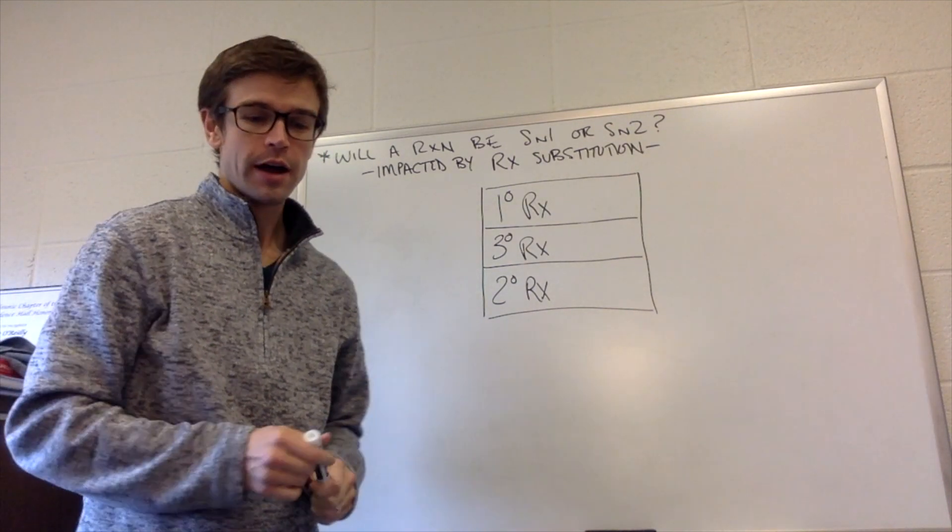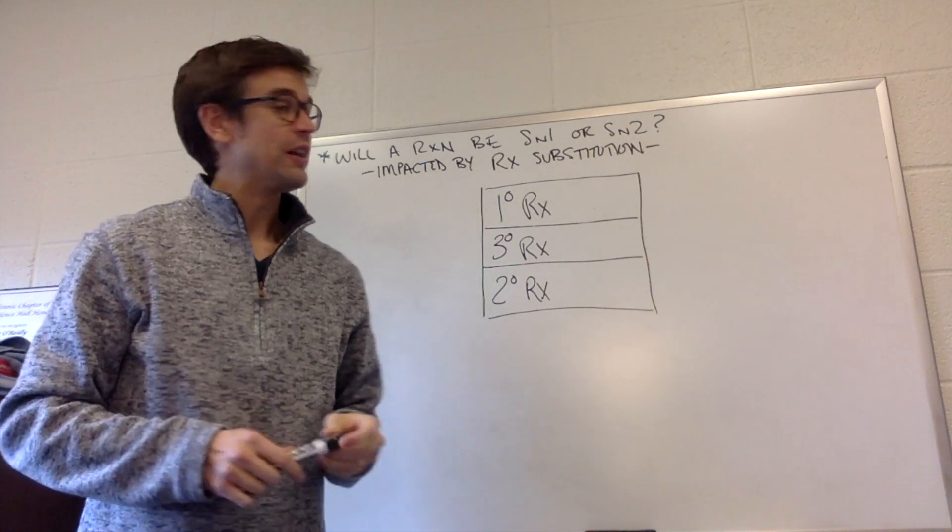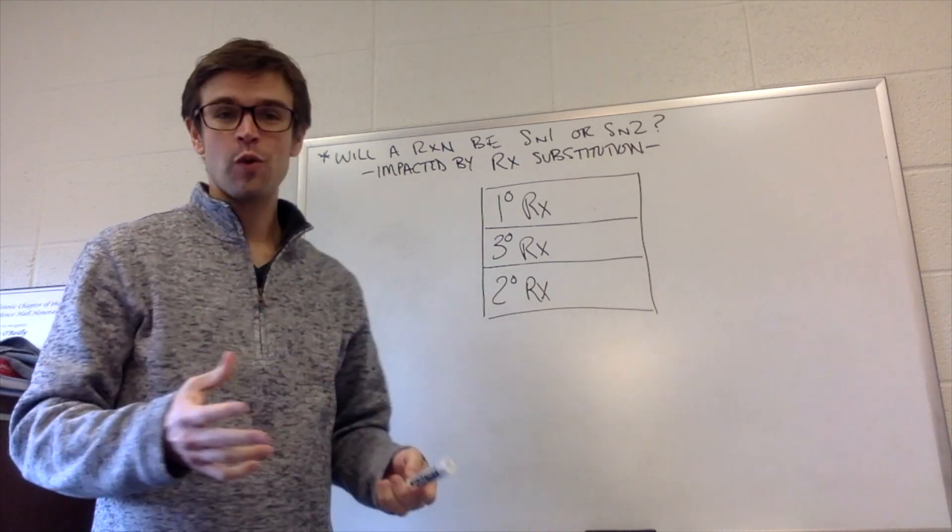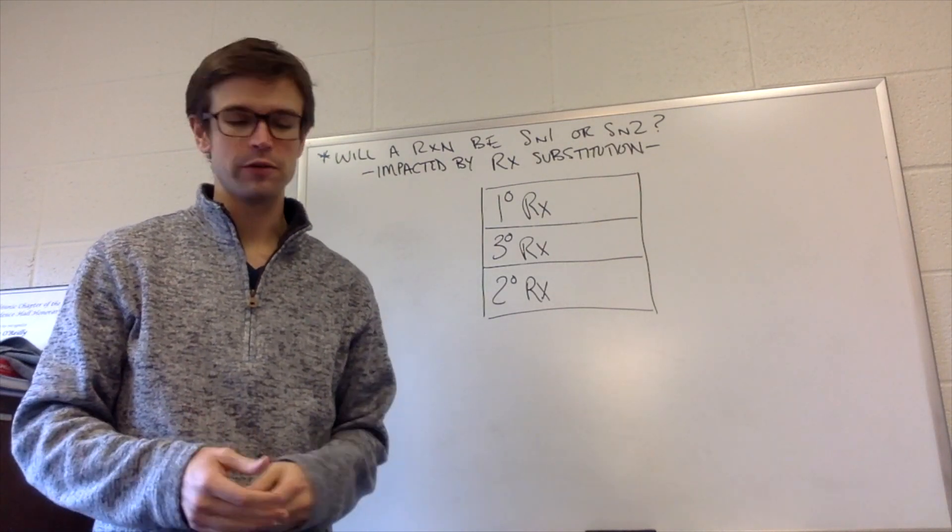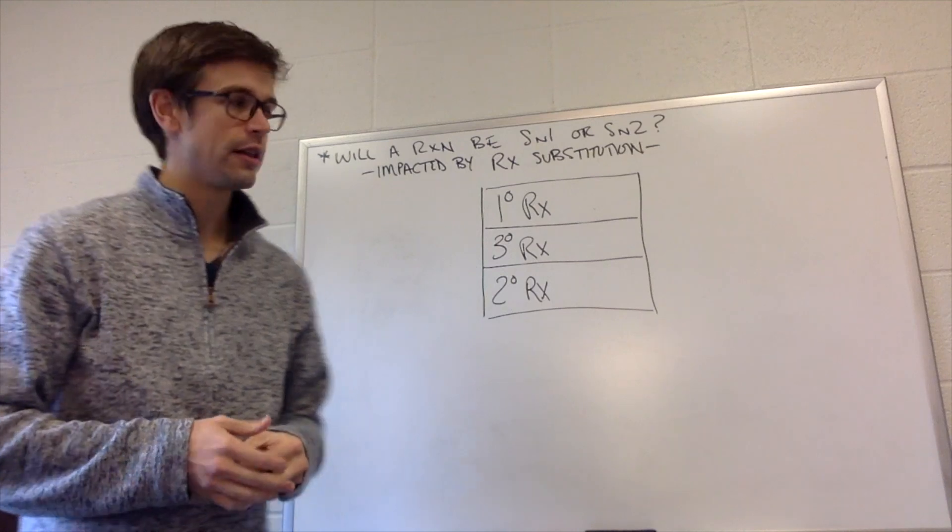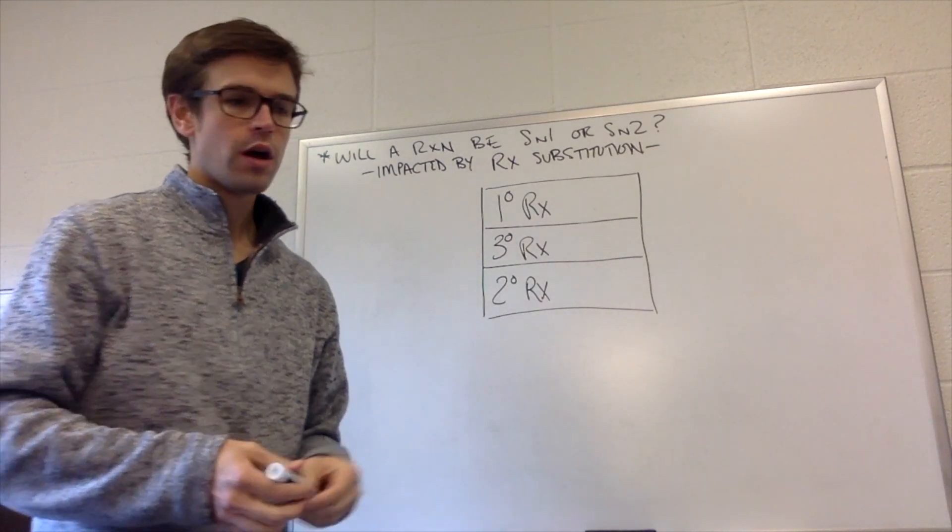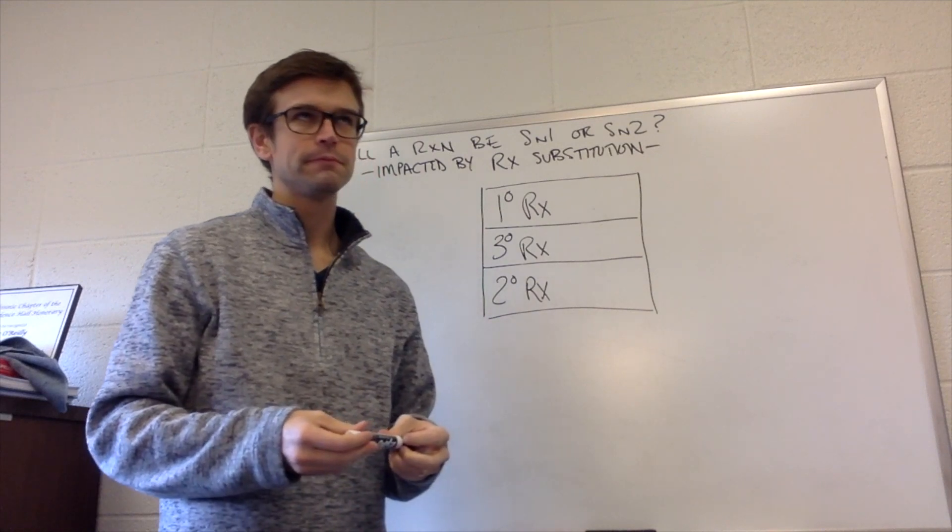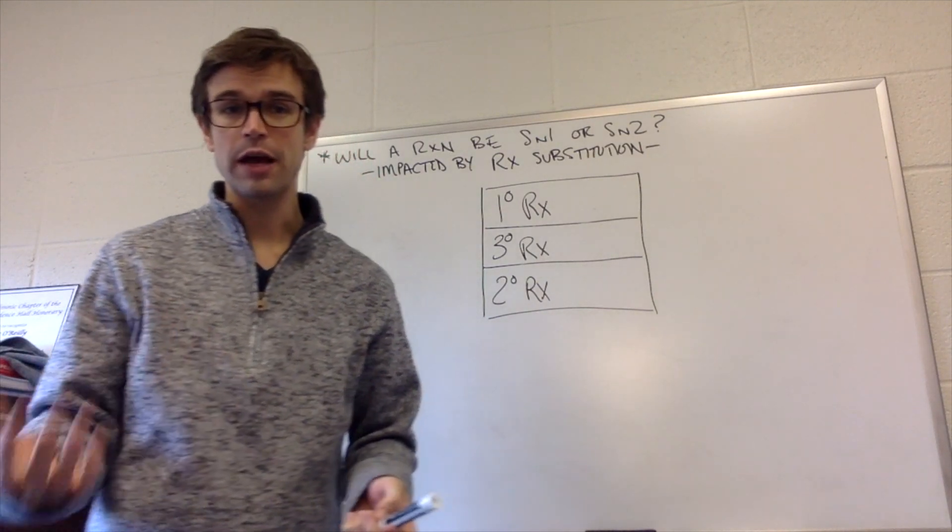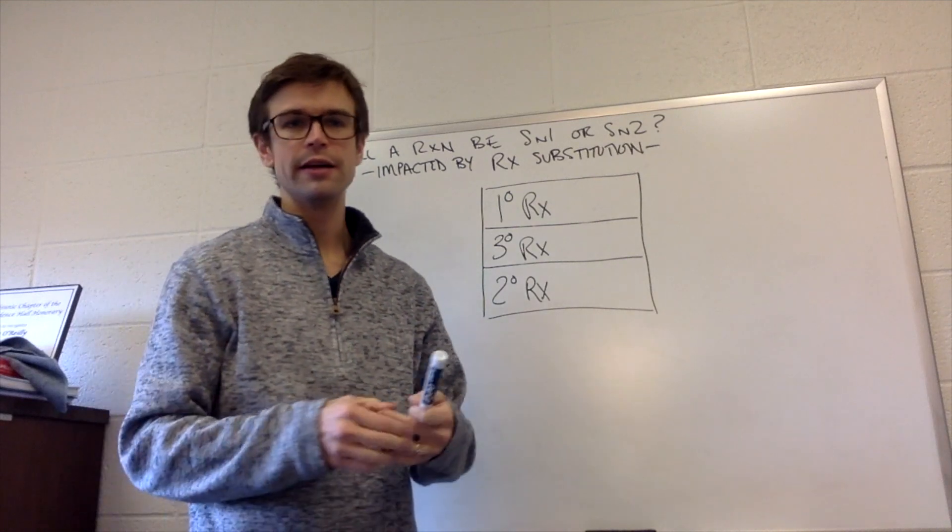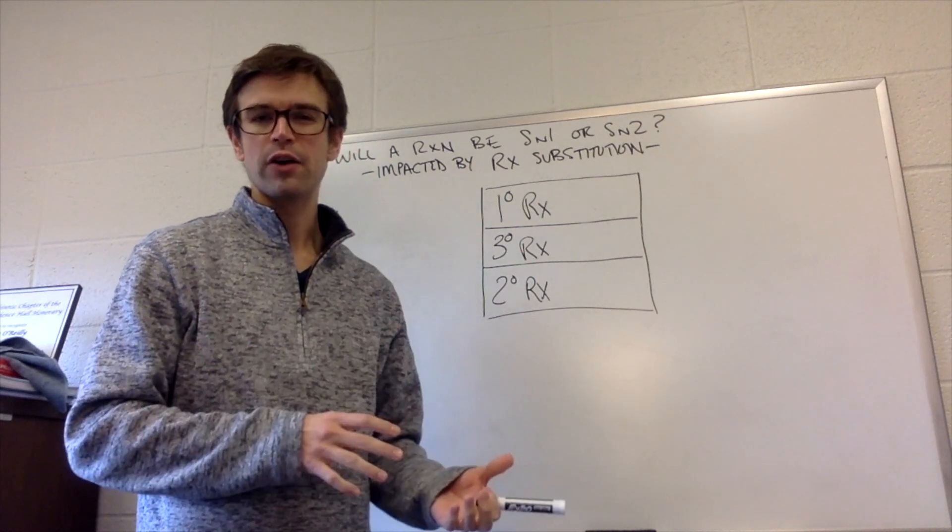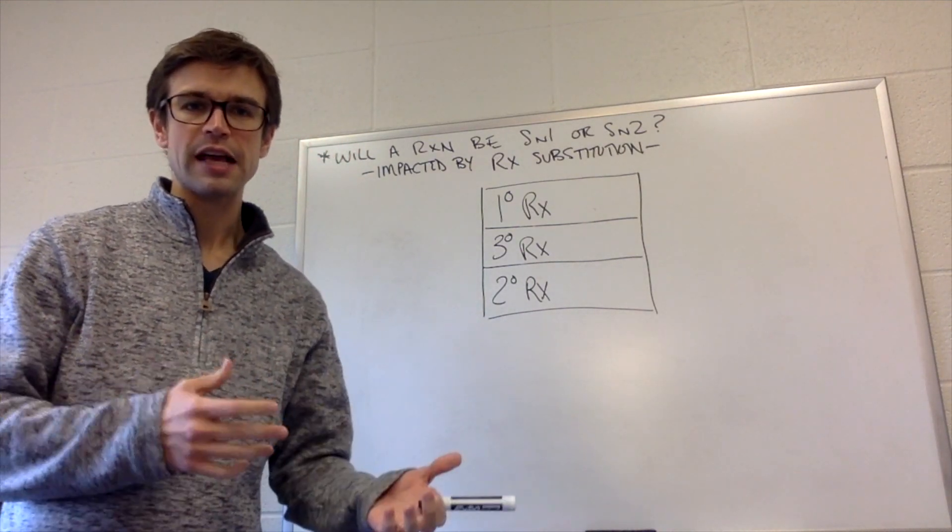Hi, so we've learned a lot about SN1 chemistry and SN2 chemistry. We've learned about their rates, what makes them fast, what makes them slow, their mechanisms, their stereochemical implications. But what we haven't talked about yet is why a specific alkyl halide would do one of those versus the other.